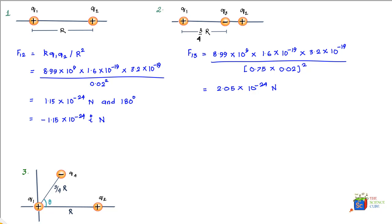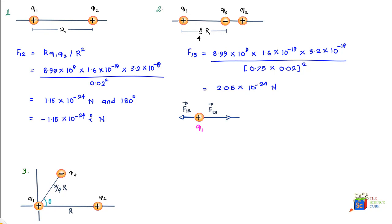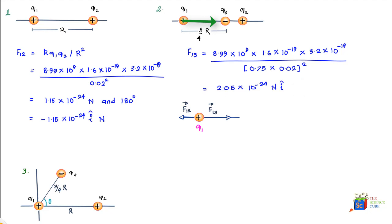This is the magnitude of the force on 1 due to 3. Since q3 is a negative charge, it will pull q1 toward it — in the positive i direction. So the force vector f13 is in the positive i direction, meaning we multiply the magnitude by i.